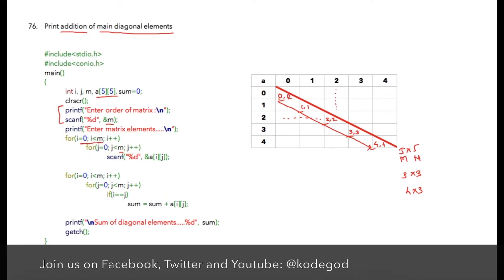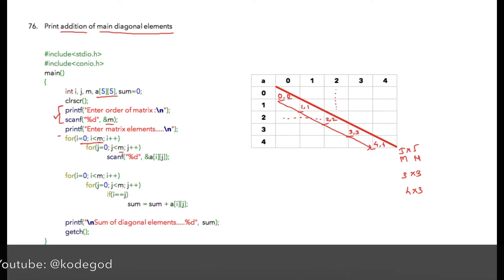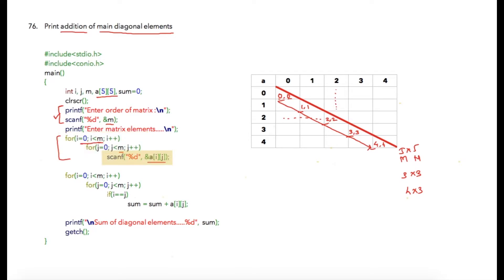After accepting the value of m, I write my for loops for accepting the array elements. All array elements will be stored in the array. After that, we iterate through the matrix using the same variable m for both rows and columns. Inside the second loop for columns, I write a condition: if i is equal to j, that is if the row number is equal to the column number.